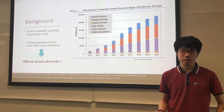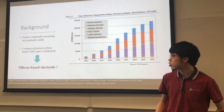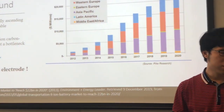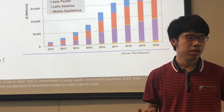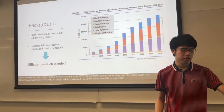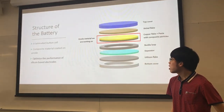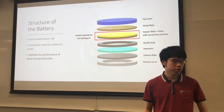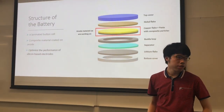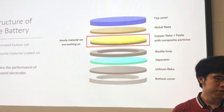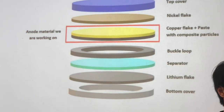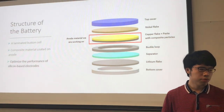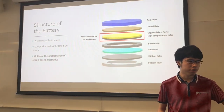Therefore, people started to find an alternative way to solve this issue — silicon-based electrodes. Silicon has a large specific energy capacity, but lacks good electrical conductivity. As you can see, the battery we are going to design has the structure shown on the right side here, where all components are encapsulated and assembled together. In this project, we plan to improve the composite material of the anode to optimize battery performance.